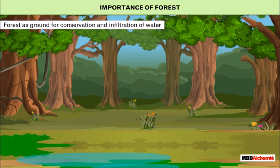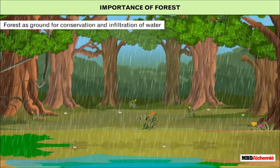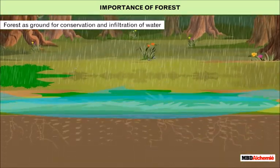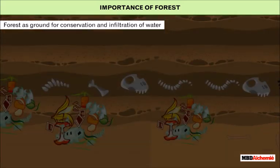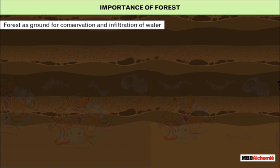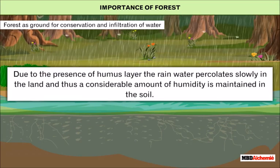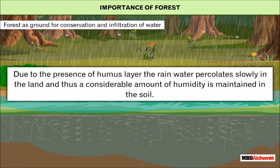Numerous insects, spiders, beetles, and various other animals live on the bark of trees, plant leaves, and on the forest floor, which is covered with decaying leaves. Roots of trees in the forest bind the soil and help rain water seep deep into the ground, thus replenishing ground water.